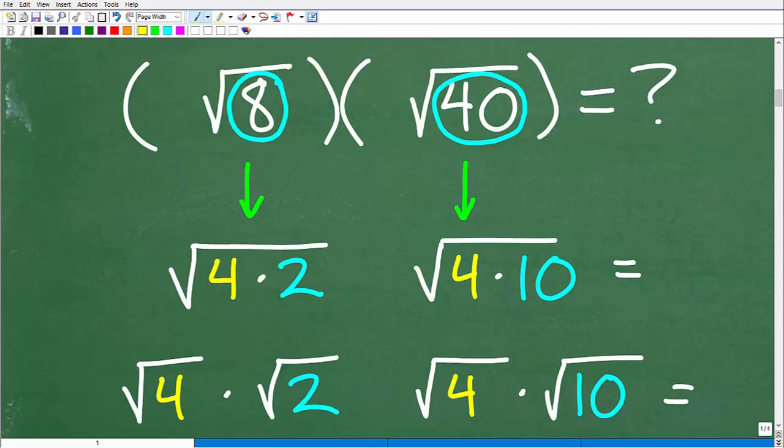So here we have the square root of 8. That's equal to the square root of 4 times 2. And the square root of 40 is equal to the square root of 4 times 10.